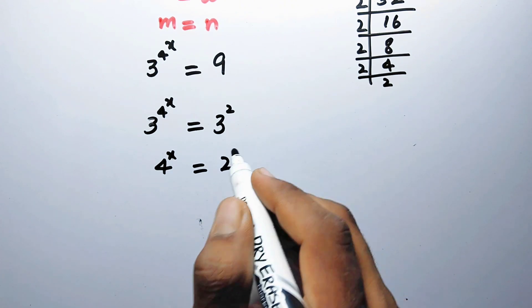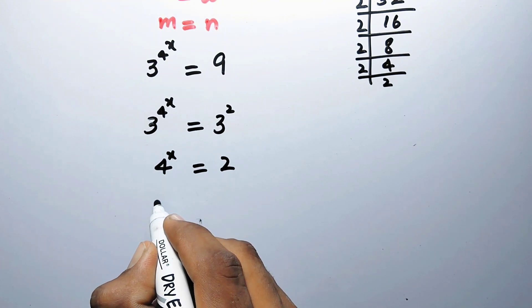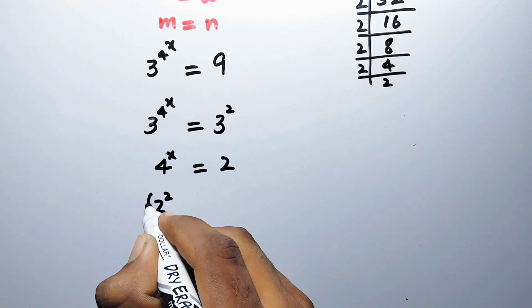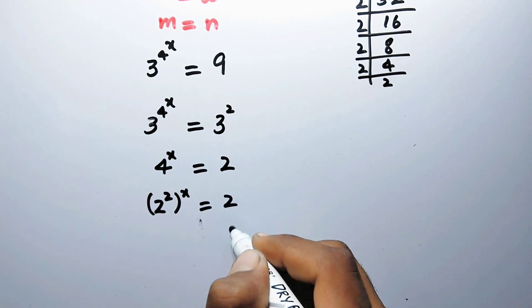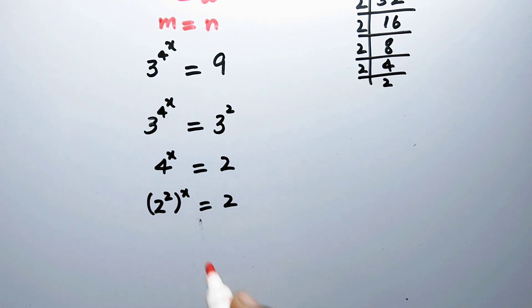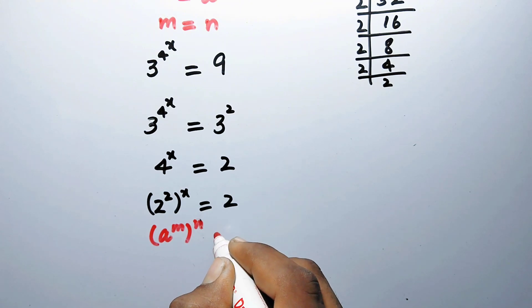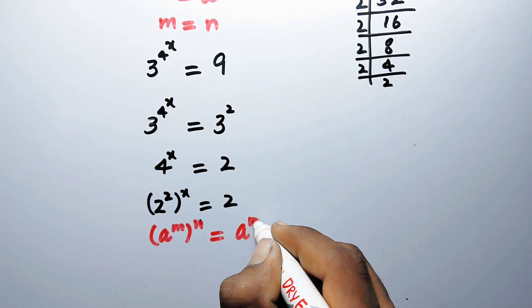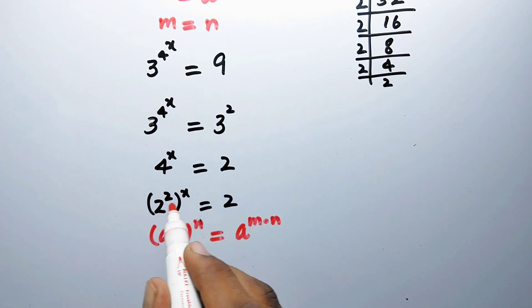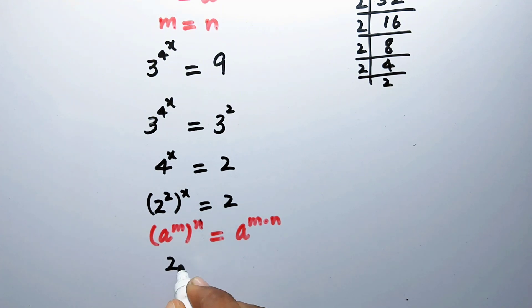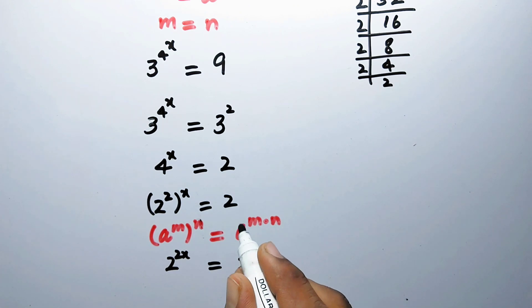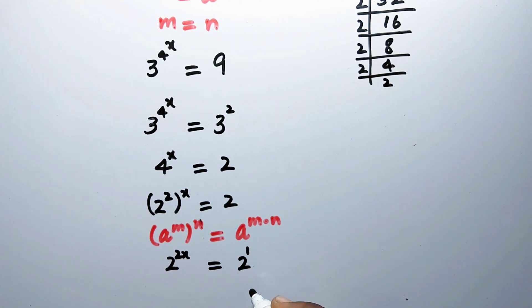We write 4 as 2 squared, so we have 2 squared to the power x equal to 2. Applying the exponent property that a to the power m, to the whole power n, equals a to the power m times n, we get 2 to the power 2x equal to 2 to the power 1.